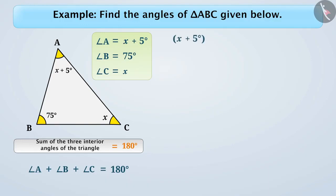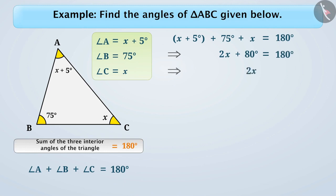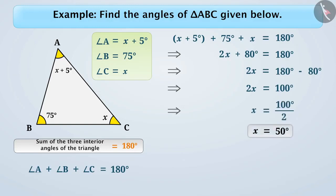If we substitute these values in the equation, then we will get x plus 5 plus 75 degrees plus x is equal to 180 degrees. That is, 2x plus 80 degrees is equal to 180 degrees. We can write it as 2x is equal to 180 degrees minus 80 degrees. That means 2x is equal to 100 degrees, or x is equal to 100 degrees divided by 2, which is equal to 50 degrees. Therefore, we get angle C is equal to 50 degrees and angle A is equal to 50 degrees plus 5 degrees, which is equal to 55 degrees.